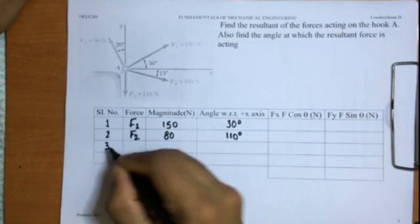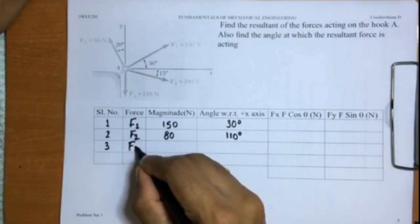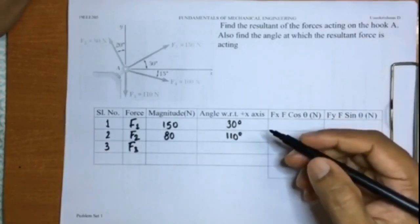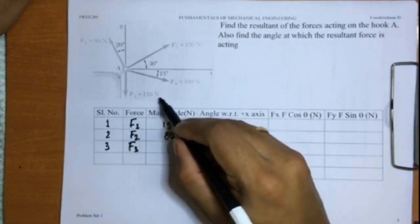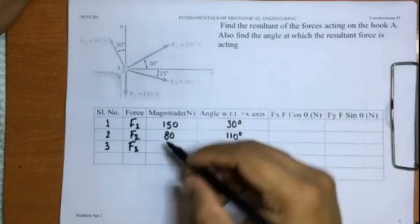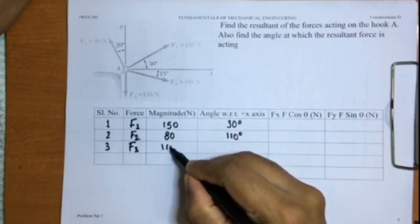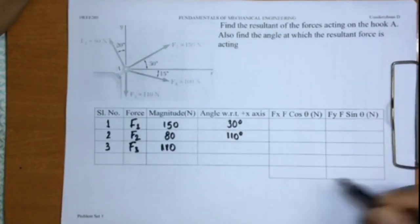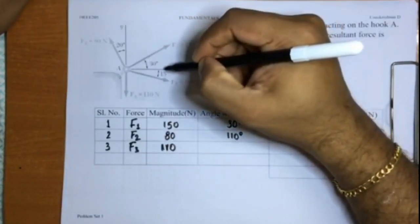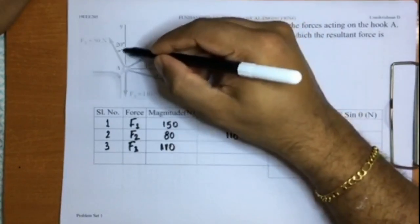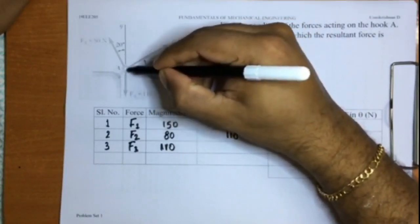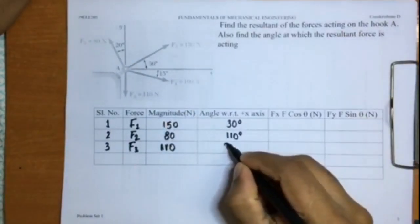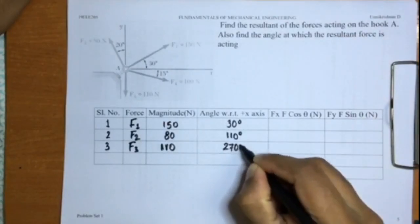The third force F3 has 110 newtons as the magnitude. And the angle, if you see here, this is 90, 180, 270 - it is acting 270 degrees with respect to the positive x-axis.